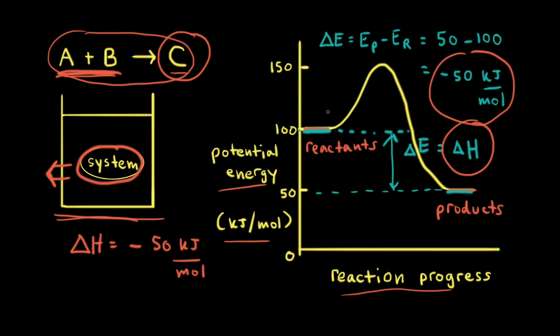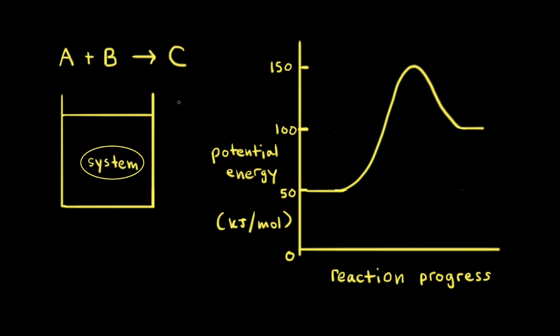For an energy profile, when the energy of the reactants is higher than the energy of the products, this is the energy profile for an exothermic reaction. Let's say we ran a similar reaction where A plus B turned into C, but this time when we felt the beaker, the beaker felt cool to the touch. If that's the case, it's because energy was being transferred from the surroundings to the system. Since the surroundings was losing energy, that's why the beaker felt cool. So heat flowed from the surroundings to the system — this occurs in an endothermic reaction, and the change in enthalpy delta H is positive for an endothermic process.